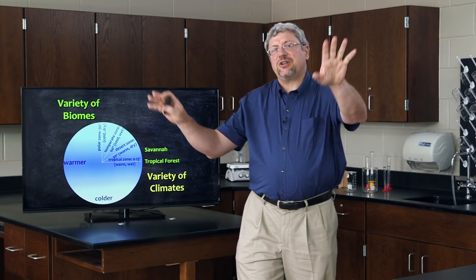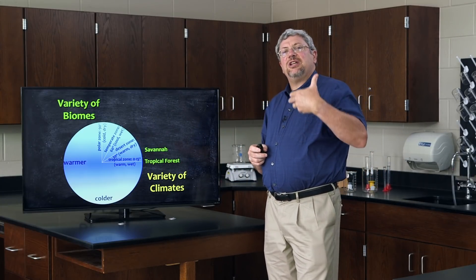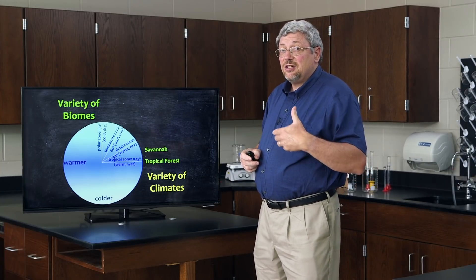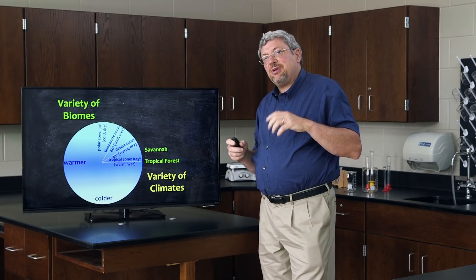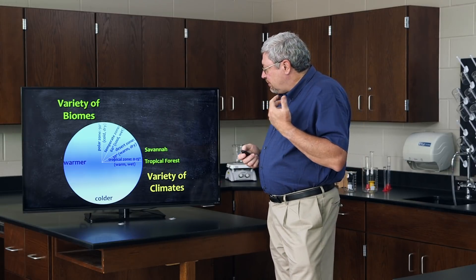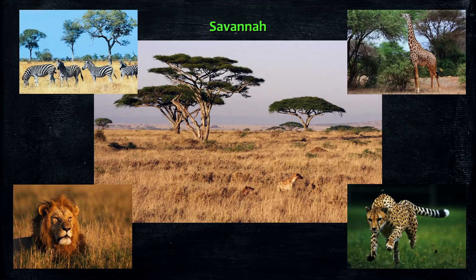Under these conditions, there isn't enough rainfall to prevent fires from spreading and burning the vegetation from time to time. Lightning will start a fire which burns the vegetation. Usually it's not possible for most trees to survive under those conditions. So these areas end up being full of grass, which can burn and survive that burning, but very few to no trees. So the savanna is what you see on either side of the tropical zone, to the north and to the south, dominated by grass with occasional trees.